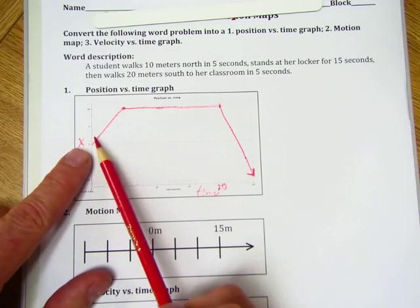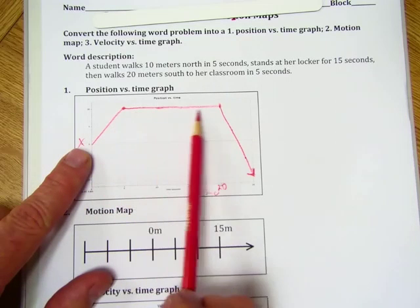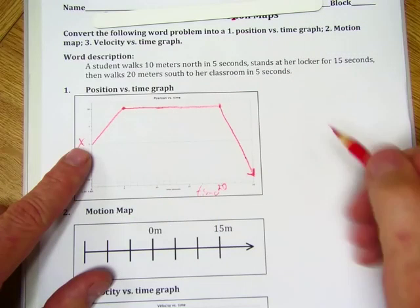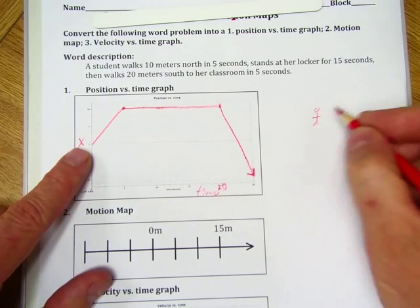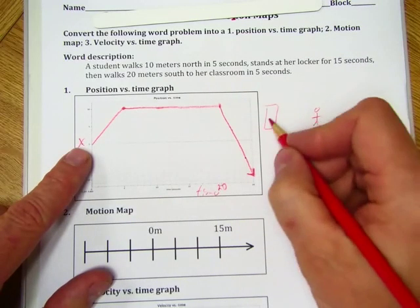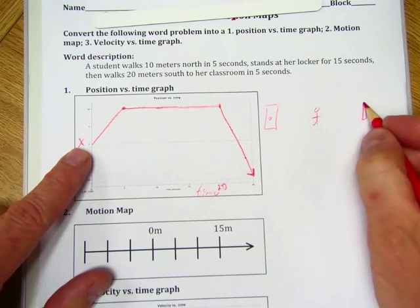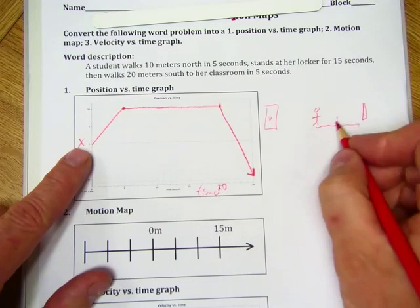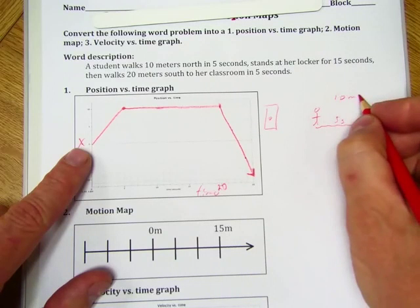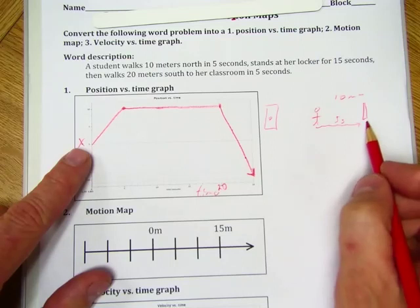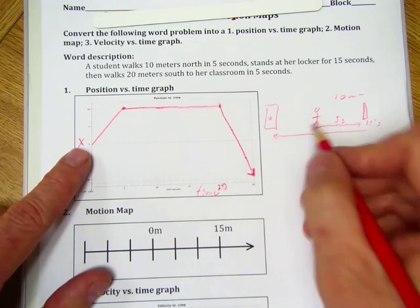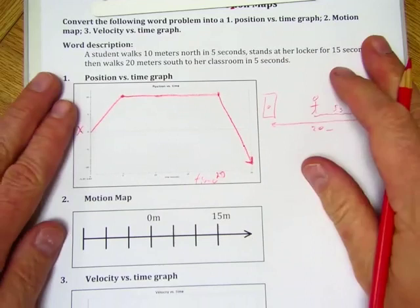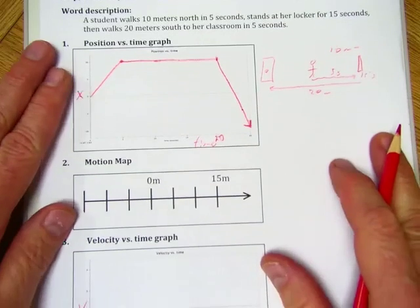So this is her motion map. She went 10 meters in 5 seconds. She stood at her locker for 15 seconds, and then she came back all the way to her classroom. She's standing here. Her classroom is back here. Her locker is up here. She walked this way, took her 5 seconds, and that's 10 meters. She stood there 15 seconds, and then she walked back a total of 20 meters to her classroom.